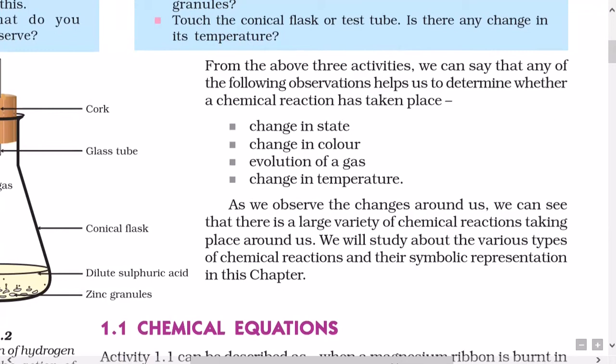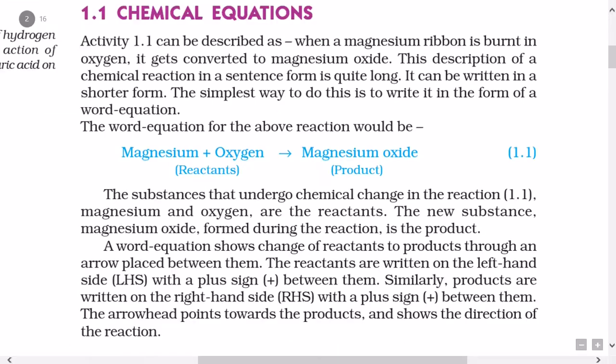From the above three activities we can say that any of the following observations helps us to determine whether a chemical reaction has taken place: change in state, change in color, evolution of a gas, and change in temperature. As we observe the changes around us, we can see that there is a large variety of chemical reactions taking place around us. We will study about the various types of chemical reactions and their symbolic representation in this chapter.